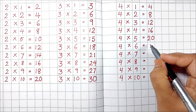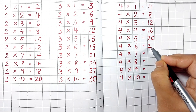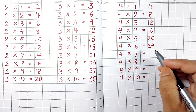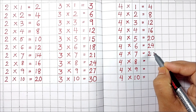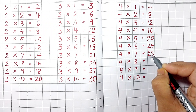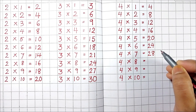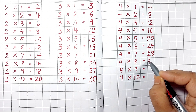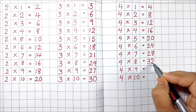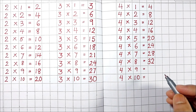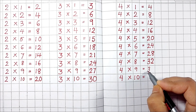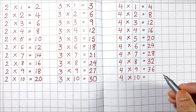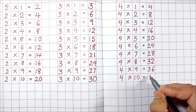4 6's are 24. 4 7's are 28. 4 8's are 32. 4 9's are 36. 4 10's are 40.